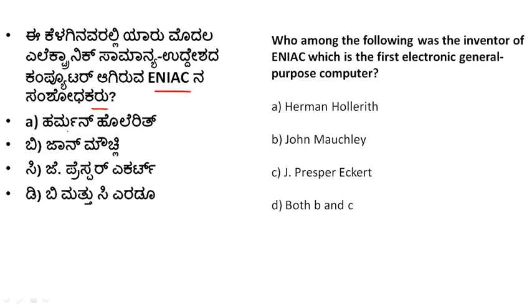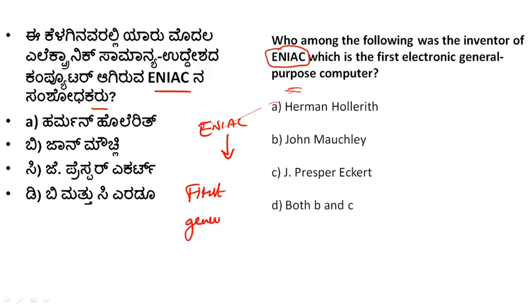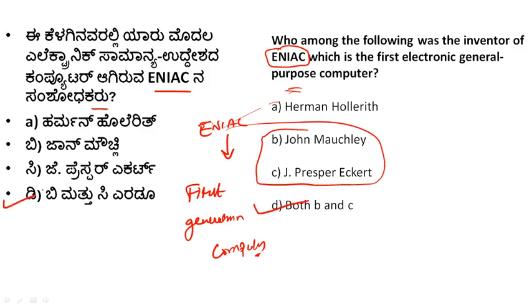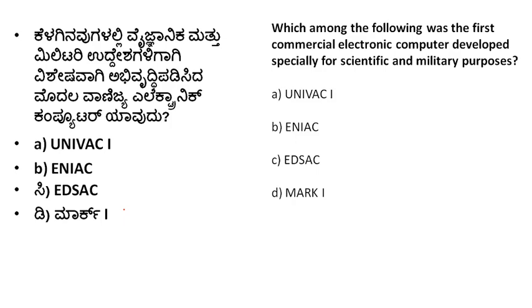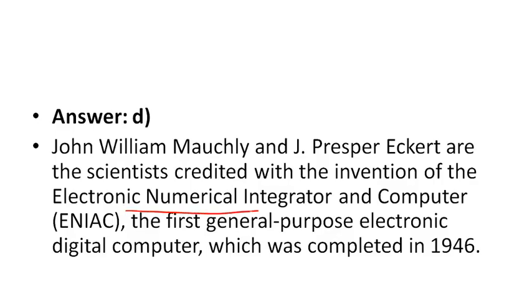ENIAC - super easy and basic question. What is ENIAC? ENIAC full form - which type of computer is it? ENIAC is the first electronic general purpose computer. It is a first generation computer. Full form: Electronic Numerical Integrator and Computer. This is the first general purpose electronic and digital computer.